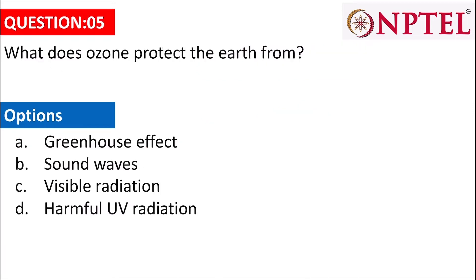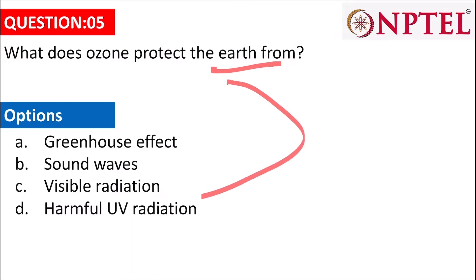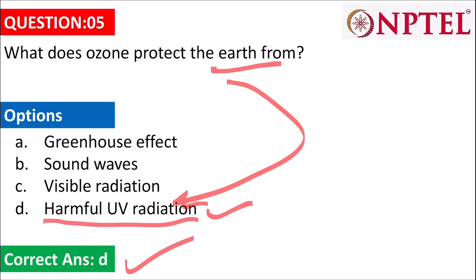The next question asks what ozone protects the Earth from. Ozone is a layer found in the stratosphere which protects us from harmful UV radiations. So the answer is D.